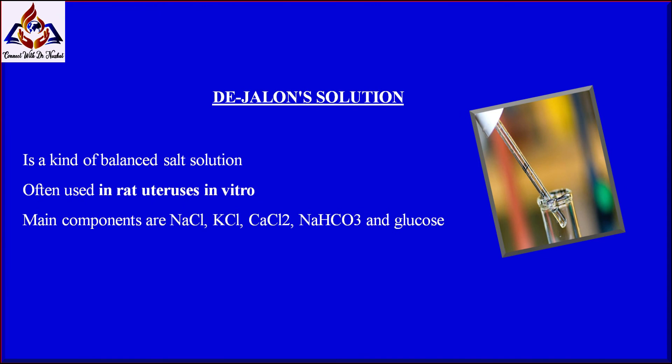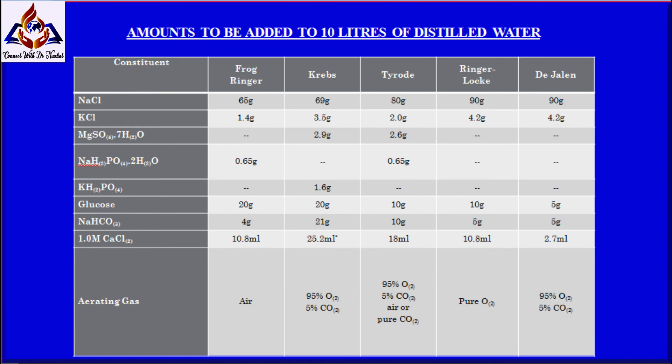What is D-Gelin solution and what is it used for? This solution is a kind of balanced salt solution in biochemistry. The main components are sodium chloride, calcium chloride, sodium bicarbonate, and glucose. It is often used in rat uterus in vitro experiments. This is the chart of physiological salt solution showing the amounts to be added to 10 liters of distilled water.